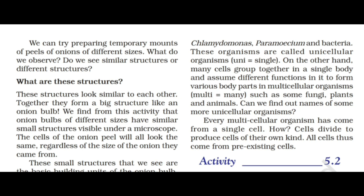What are these structures? These structures look similar to each other. Together they form a big structure like an onion ball. These are cells. In this chapter, there are cells that form an onion bulb. These are cells that make up an organism. We find from this activity that onion bulbs of different sizes have similar small structures visible under a microscope.